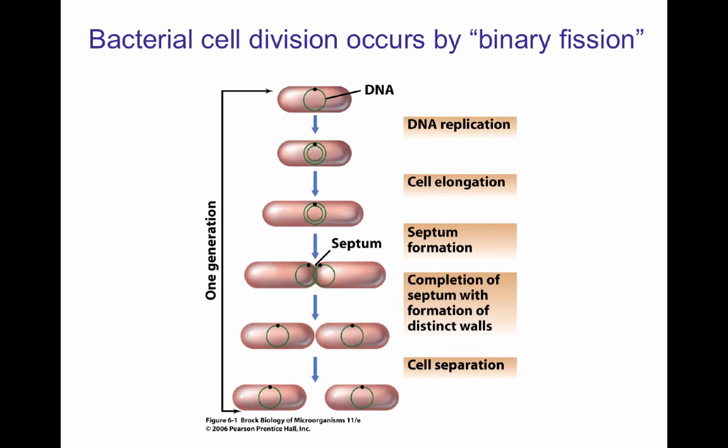Bacterial cell division occurs by binary fission — the separation of two daughter cells that are genetically identical in size — and it involves the complex called the divisome. For the cell to divide, you have DNA replication, cell elongation requiring the divisome, and after the cell has achieved its right size, the septum forms to separate the two cells. A generation is the process in which one cell divides into two, and the time it takes is called generation time.